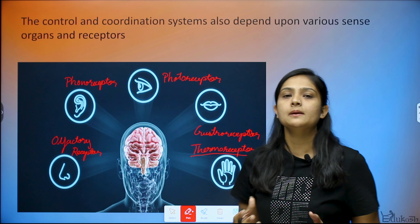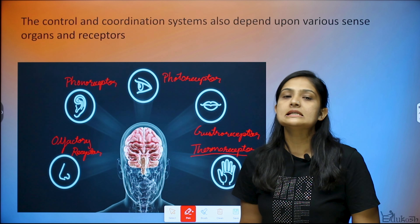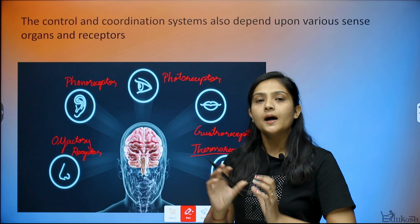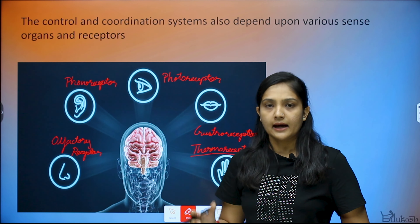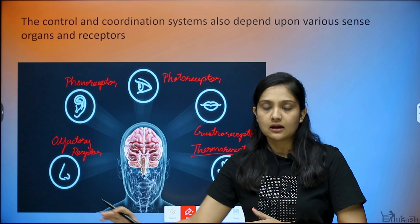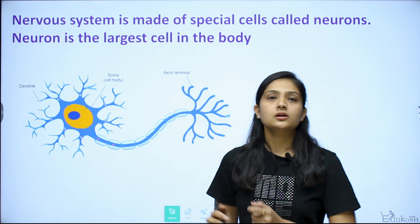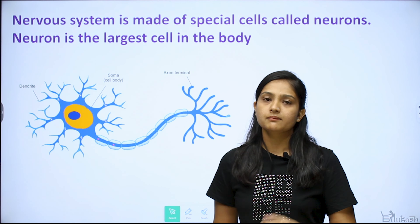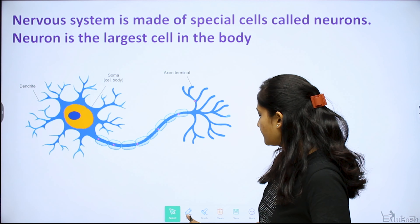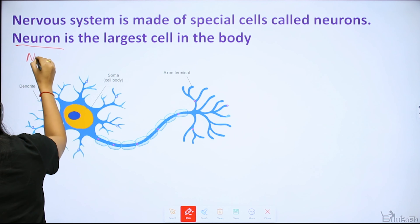All these sense organs are present in the animal body. The stimuli received by all these receptors is converted — chemical energy is converted to electrical energy — and these cells send signals through the nervous system toward the brain. The functional unit of the nervous system is the neuron, also called the nerve cell.